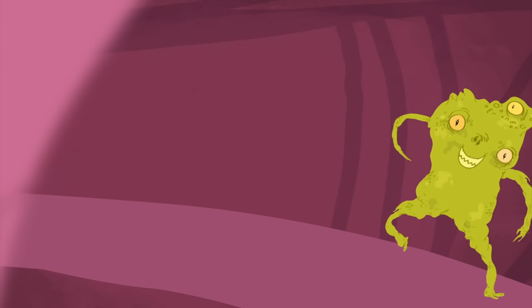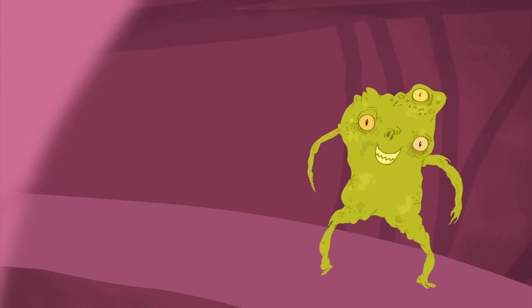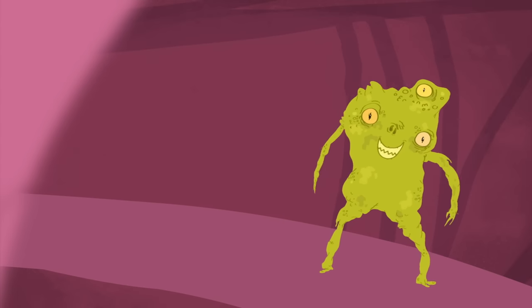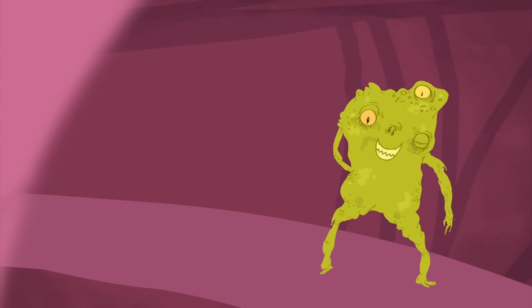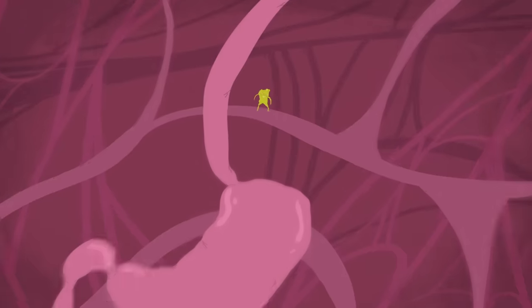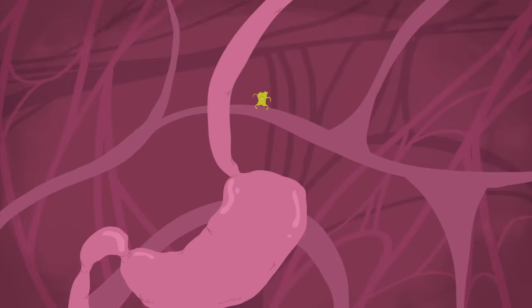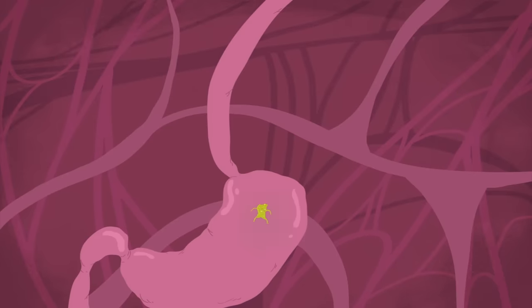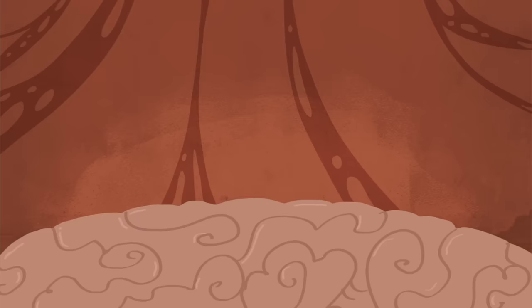The onset of cancer usually begins as a solitary tumor in a specific area of the body. If the tumor is not removed, cancer has the ability to spread to nearby organs, as well as places far away from the origin, such as the brain.